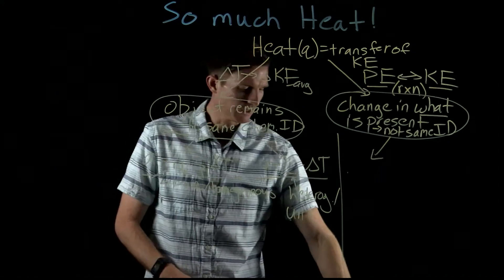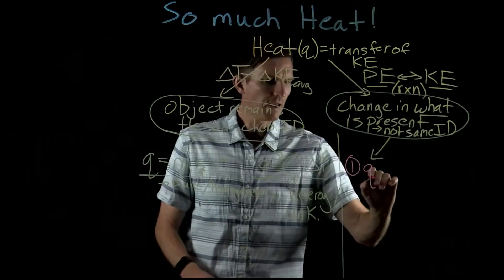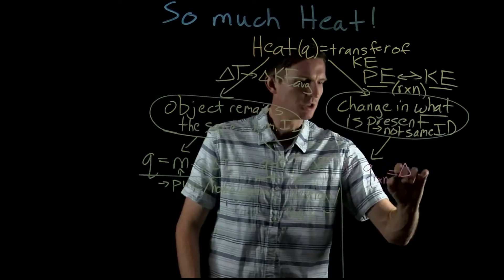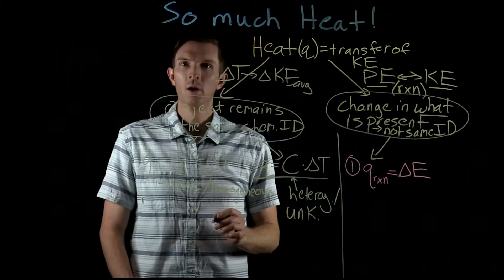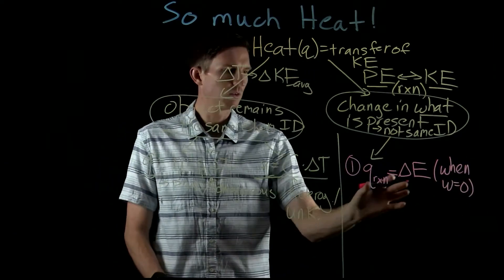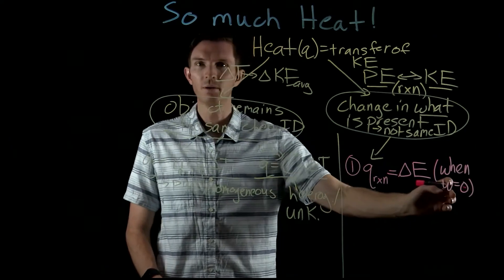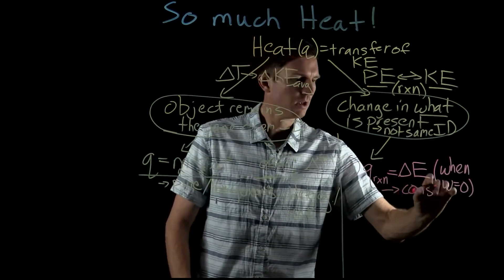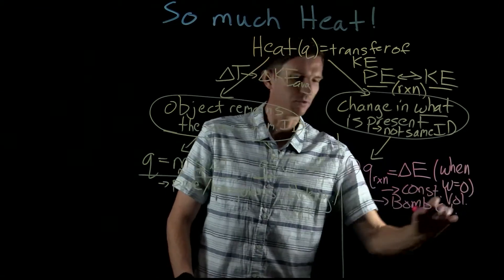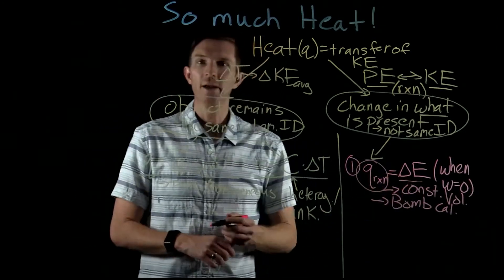One of them: the Q released or absorbed for our reaction is equal to the change in internal energy of our system. This is true when work is equal to zero — the only way we change internal energy purely through heat is if no work is done. This applies to a constant-volume situation, and our example is the bomb calorimeter. Specifically in bomb calorimeters, the heat measured for the reaction equals the internal energy change, ΔU.